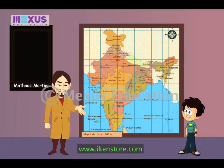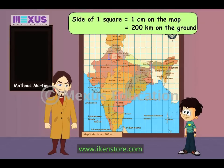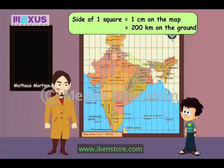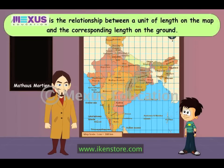Look at the map and tell me what's written on the bottom left side. The scale is: 1 cm is equal to 200 km. This is called a map scale. What's a map scale? This means that 1 cm on the map is equal to 200 km on the ground. The size of 1 square measures 1 cm on the map and 200 km on the ground. We need the help of the map scale to find the distance between two regions. In short, map scale is the relationship between a unit of length on the map and the corresponding length on the ground.